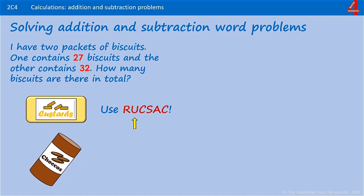Understand what the question is asking you to do. How many biscuits are there in total? We need to choose the operation and the numbers we are working with. The clue — how many in total — indicates that we are adding.